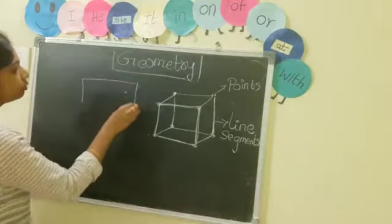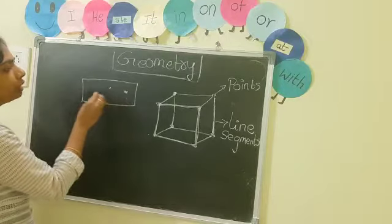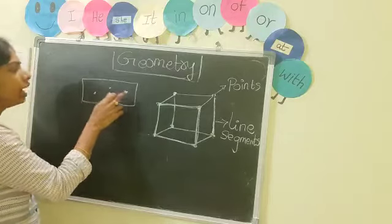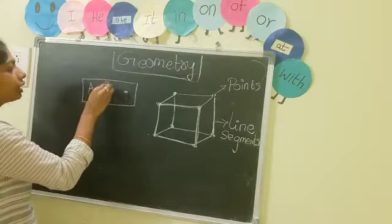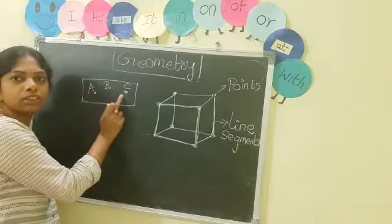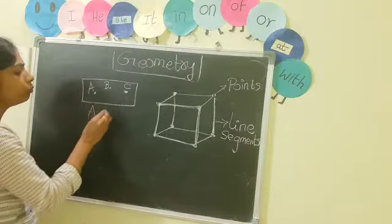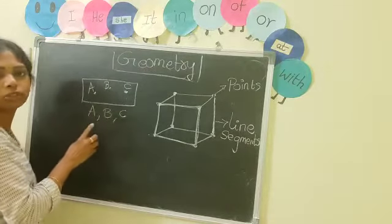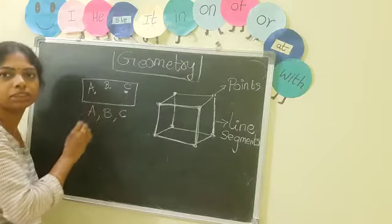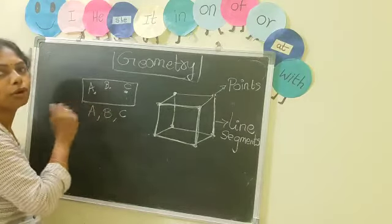Suppose on this figure, how many points are there? Three points. And we can denote them with capital letters. So what are the points on this plane figure? A, B, C — these are the points. We denote with capital letters — any letter: X, Y, Z, or A, B, C, Q, or anything. So these are called points.